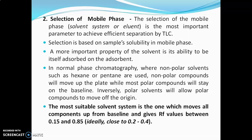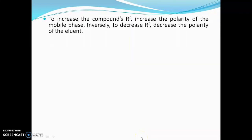And inversely, a polar solvent will allow polar compounds to move on the plate and non-polar compounds will stay on the baseline. The most suitable solvent in TLC is one which moves all compounds up from the baseline and gives an RF value between 0.15 to 0.85. Ideally, the RF value should be between 0.2 to 0.4. If we want to increase the compound's RF value, the polarity of the mobile phase should be increased. And inversely, to decrease the RF value, decrease the polarity of the eluant.